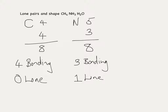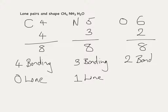We'll see what effect that has in a minute. The final example we're going to look at is water. Oxygen has six electrons in its outer shell, with two hydrogens covalently bonded, giving us a total of eight electrons. Divide by two gives us four pairs of electrons: two bonding pairs and two lone pairs.